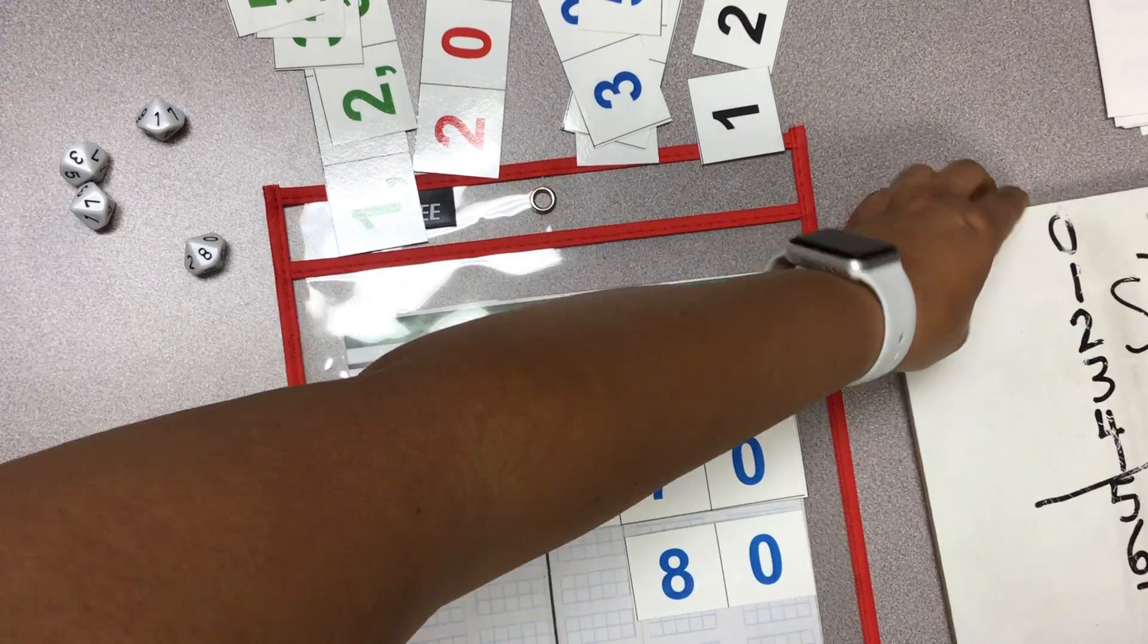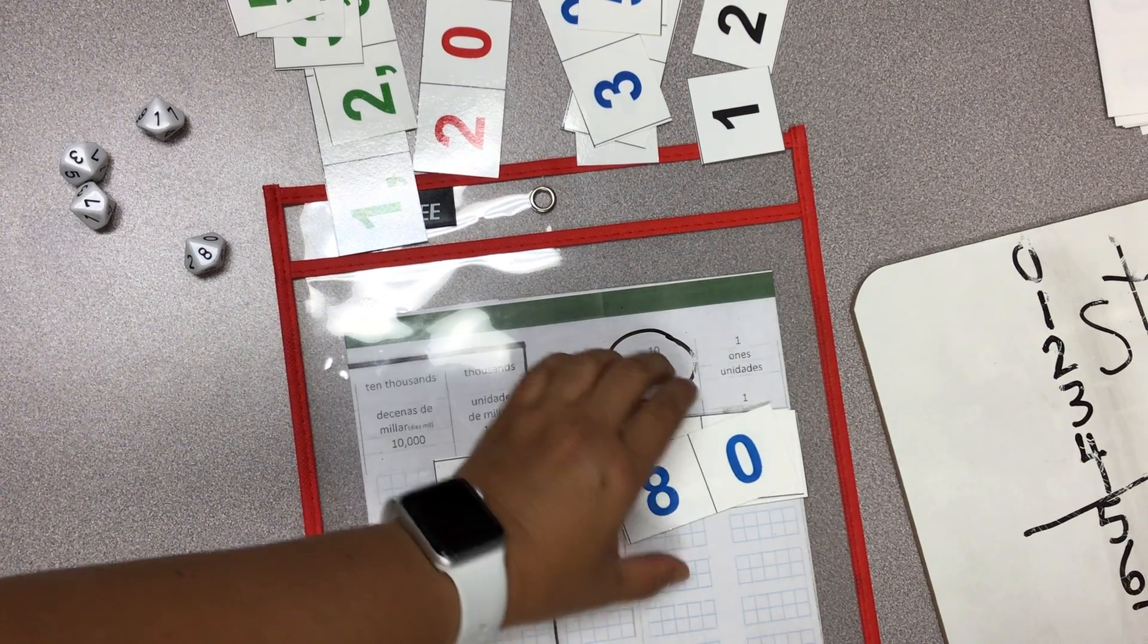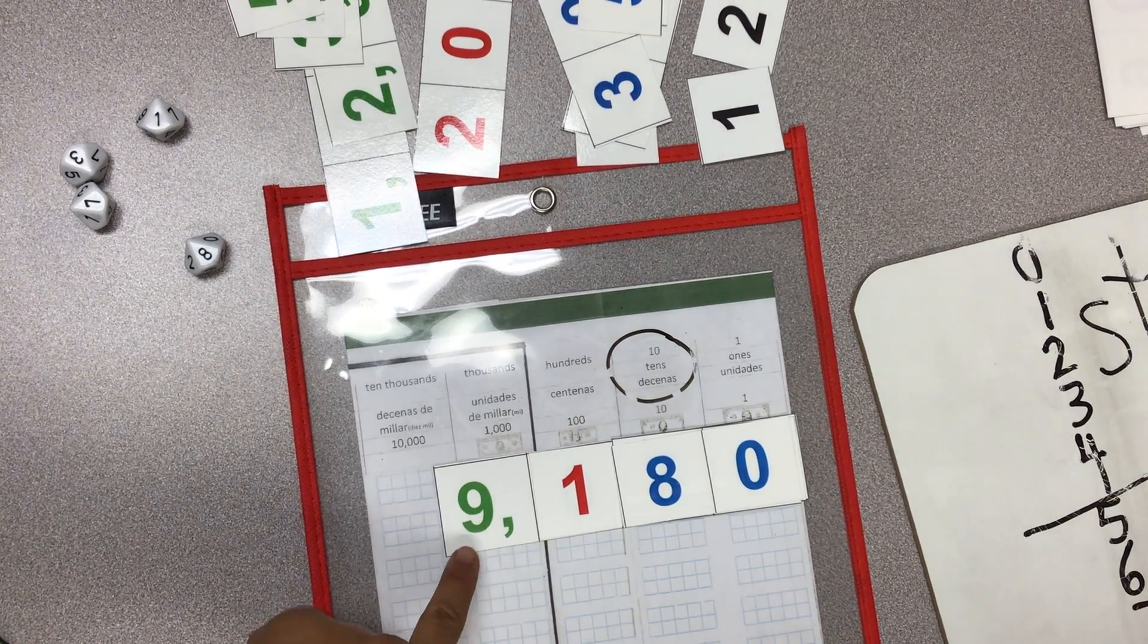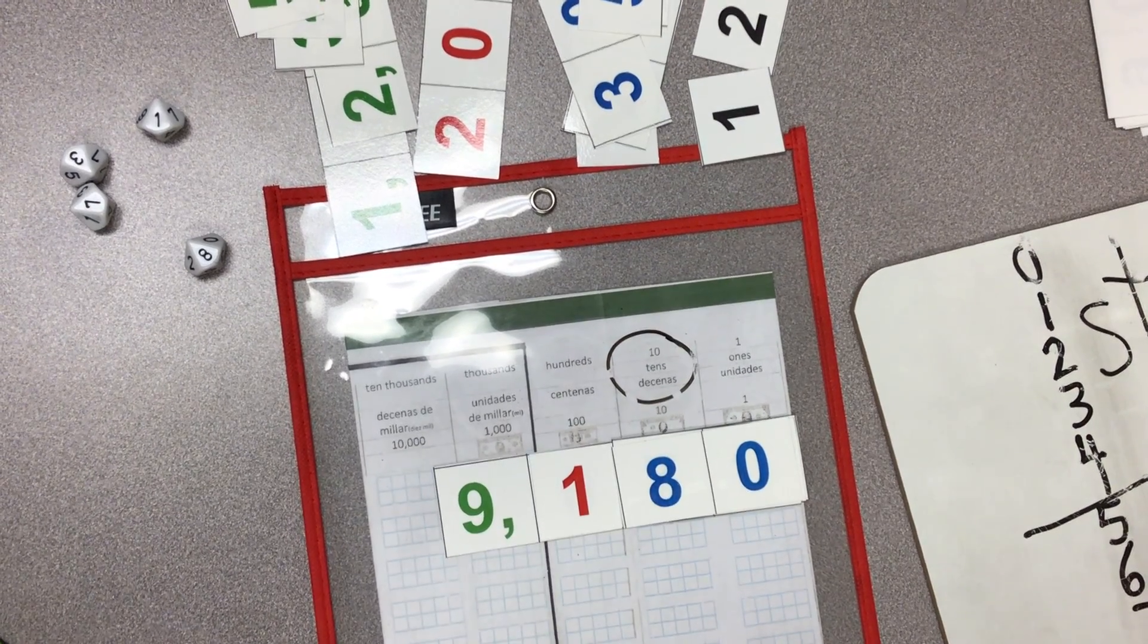Go to the next one. So I go to the next ten. And this is the answer. Nine thousand, one hundred eighty. That is the answer.